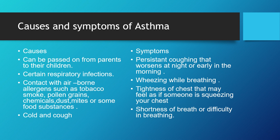The causes and symptoms of asthma: it may be genetic, passed from parents to children. Certain respiratory infections also cause asthma, and in many cases contact with airborne allergens such as tobacco smoke, pollen grains, chemicals, dust mites, or some food substances can cause asthma. Severe cough and cold can also lead to asthma. Symptoms include continuous coughing that worsens at night or early in the morning, wheezing while breathing, tightness of the chest as if someone is squeezing it, and shortness of breath.